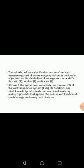Two consecutive rows of nerve roots emerge on each side, and these nerve roots distally join to form 31 pairs of spinal nerves. The spinal cord is a cylindrical structure of nervous tissue consisting of white matter and grey matter. It contains a central canal which continues with the cavity of the brain.